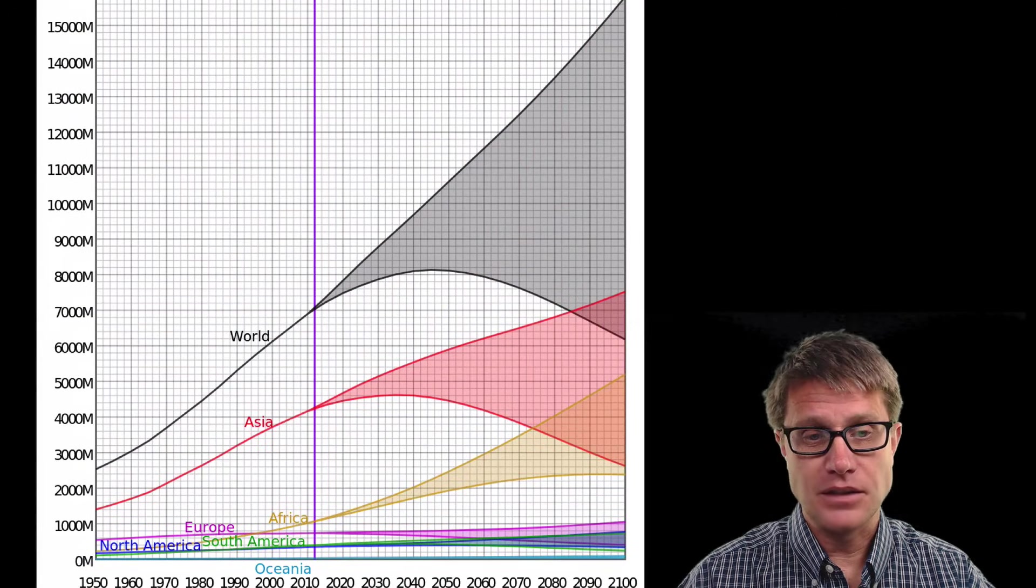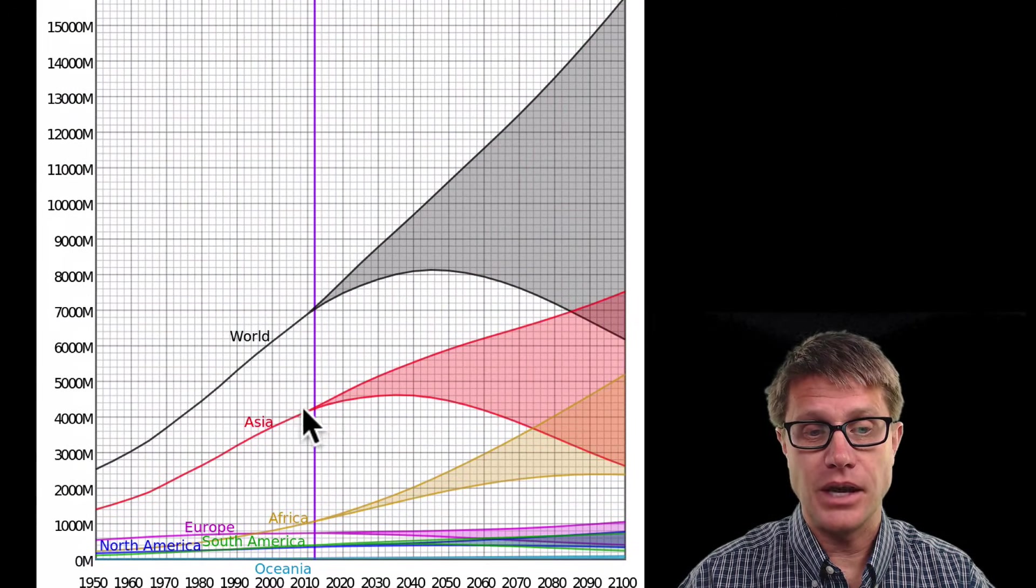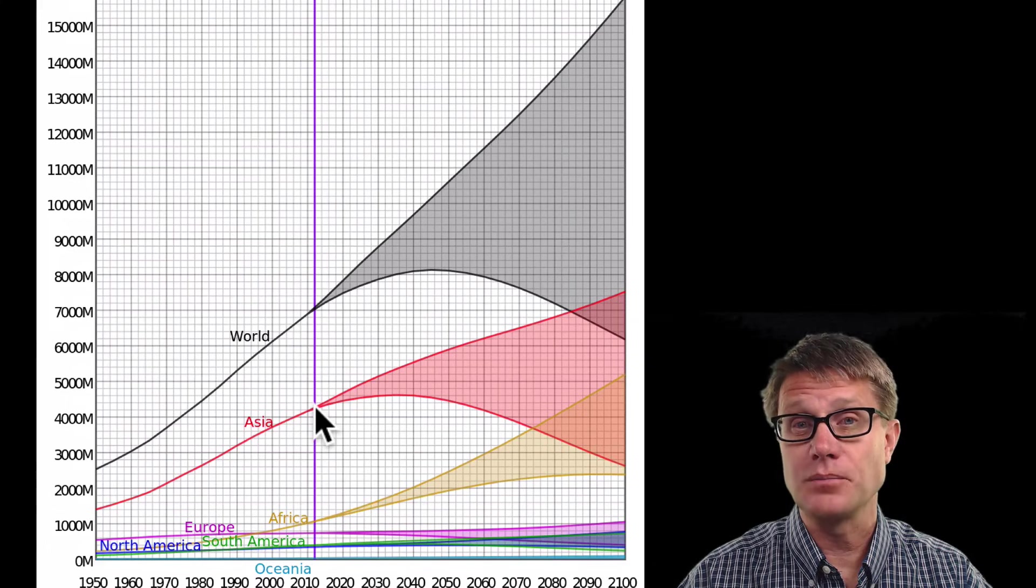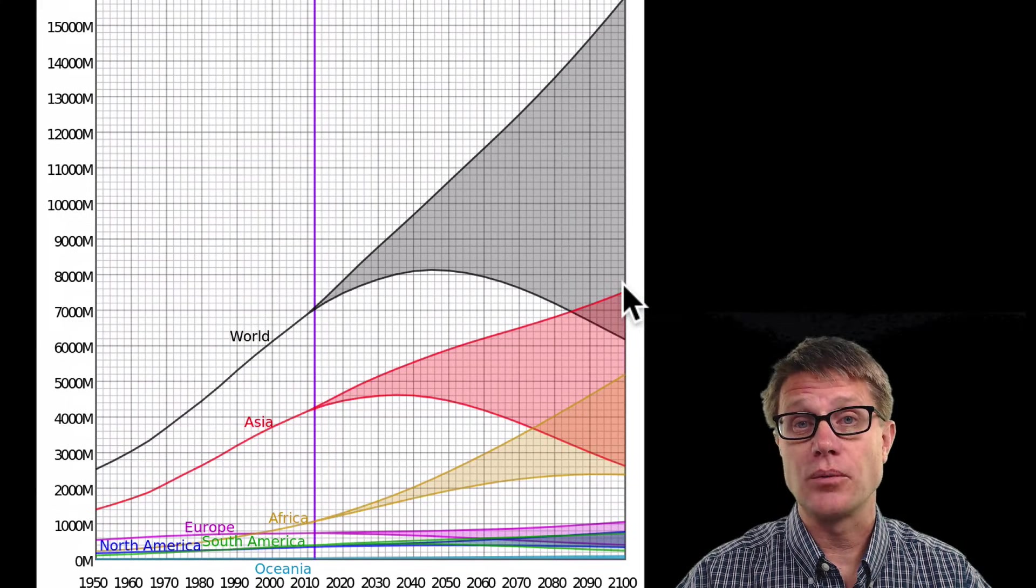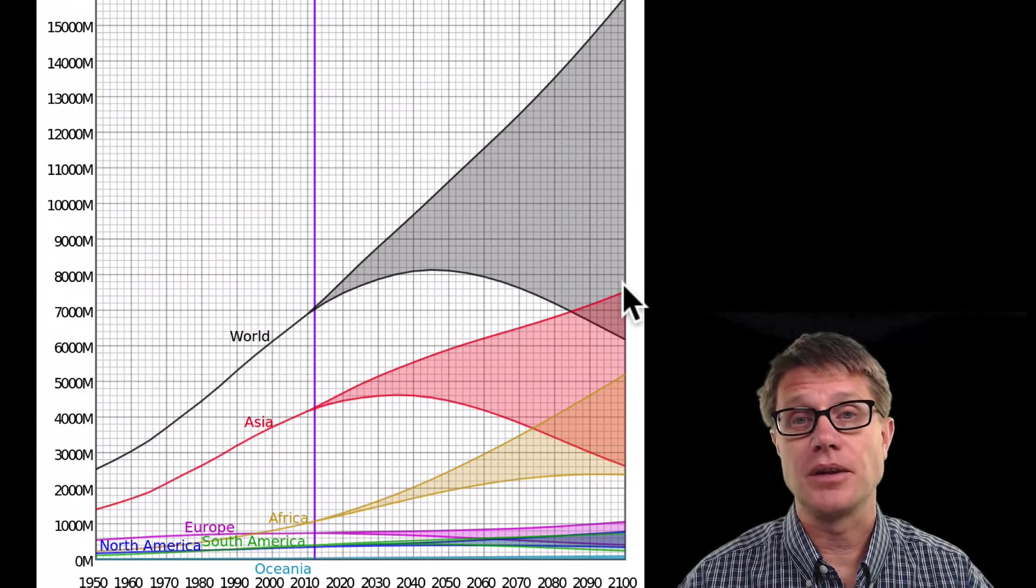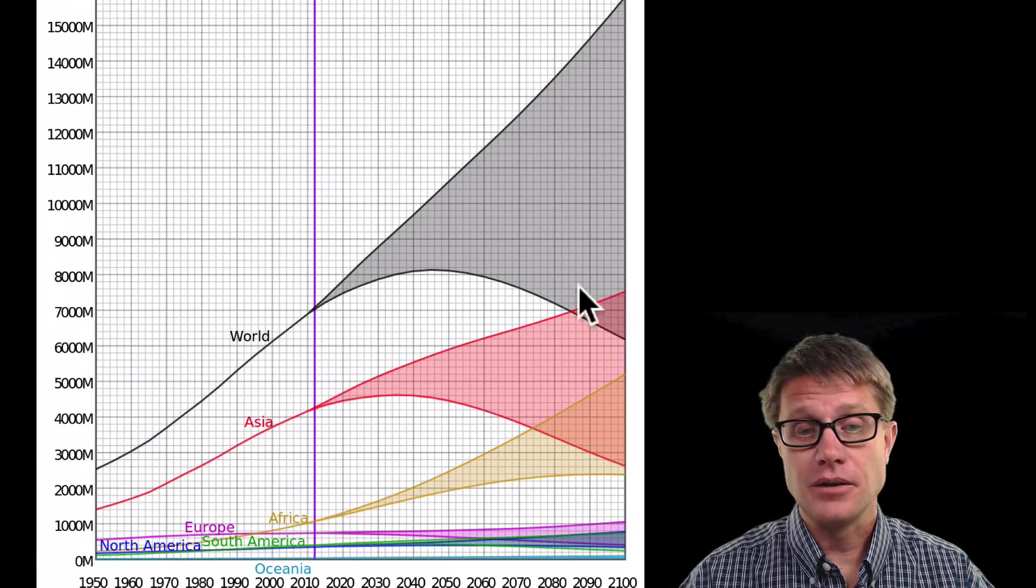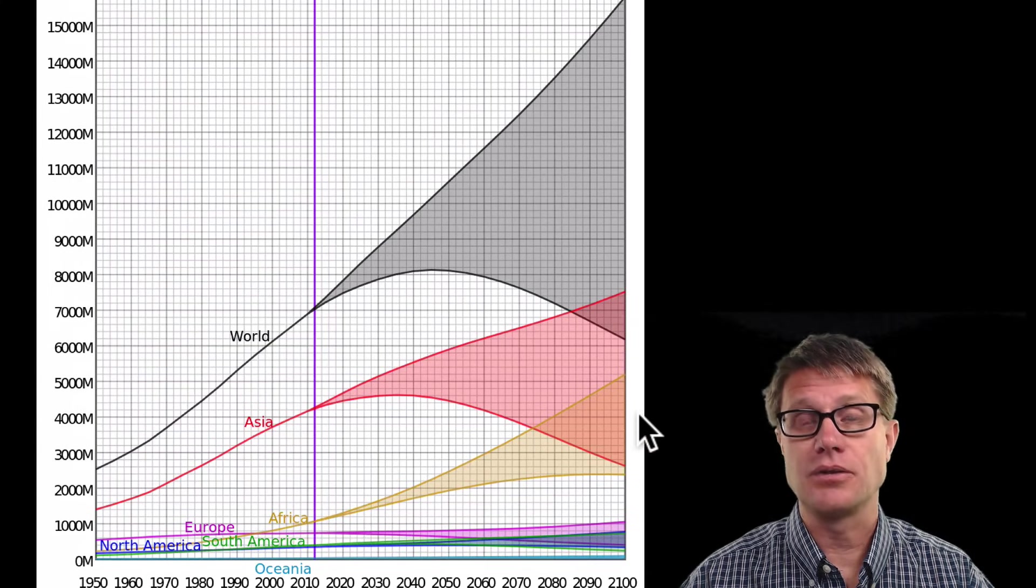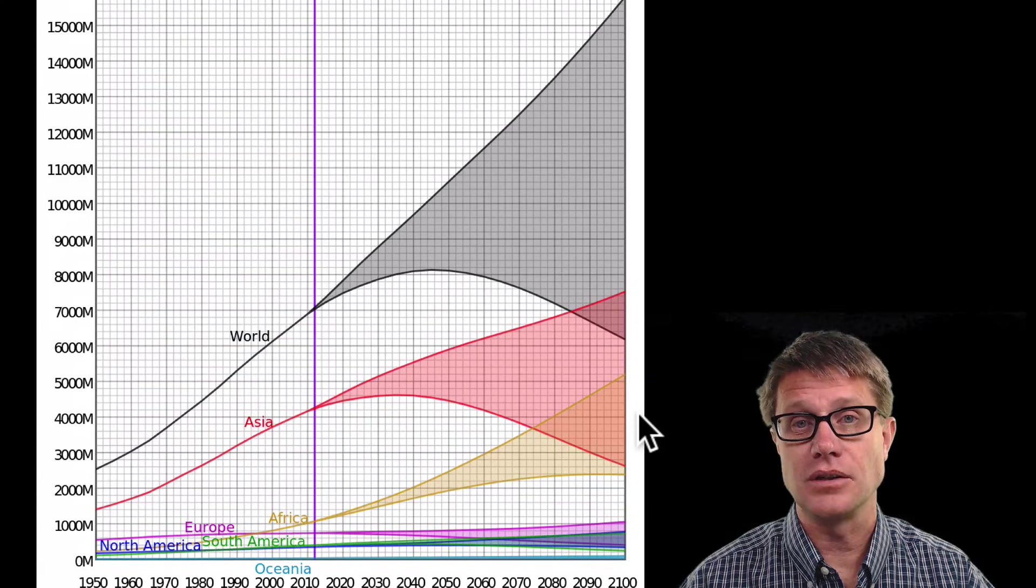And the reason it is difficult is that we have all these different continents. So Asia right now has 4 billion people. But it could increase to the point where there are more people in Asia than there are people on the planet today. Or it may not. You can see that Africa is definitely going to increase into the future and that some areas are actually going to decrease.